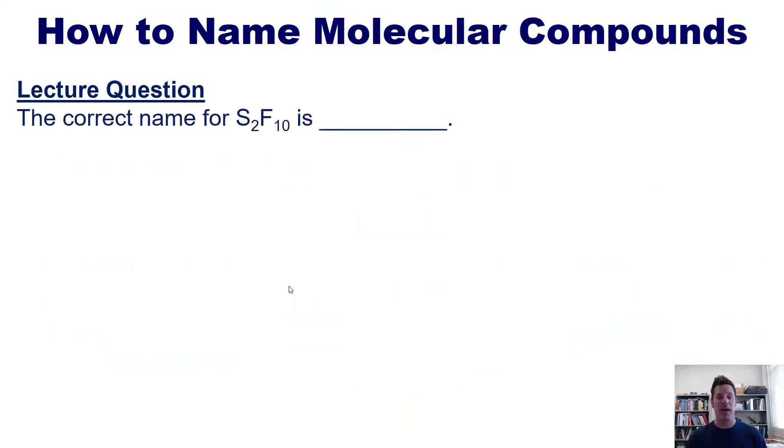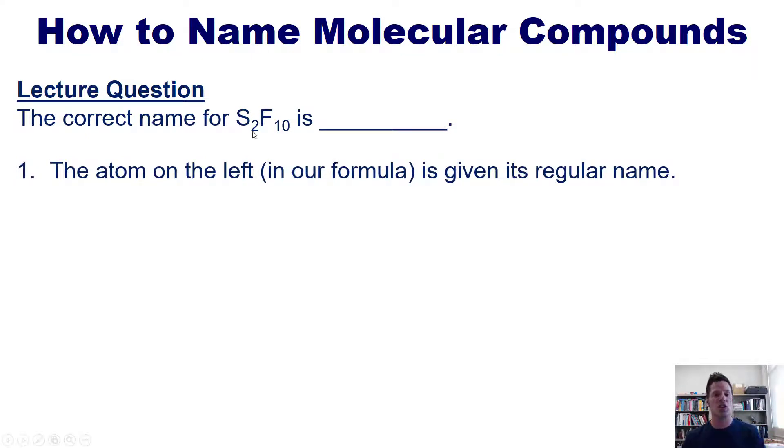Let's do one more. The correct name for this compound is what? As per usual, we'll follow our rules. One, the atom on the left is given its regular name. In this case, sulfur. However, you'll notice that this atom has a number next to it that is not one. It's a two, which means that we do have to add the prefix for two. And the prefix for two is di. So the first half of our name is going to be disulfur.